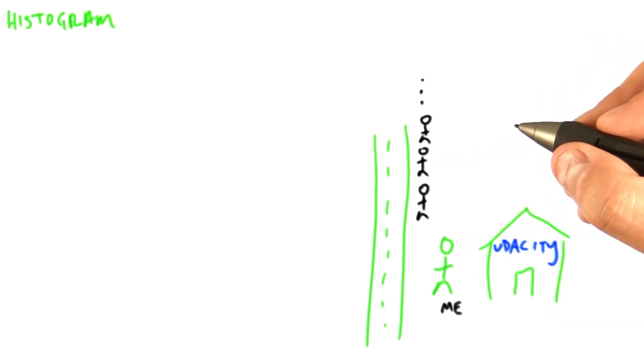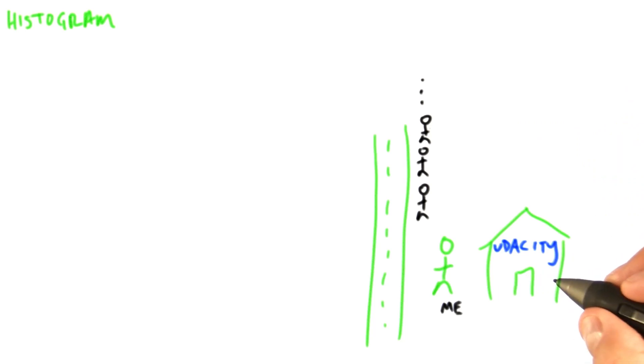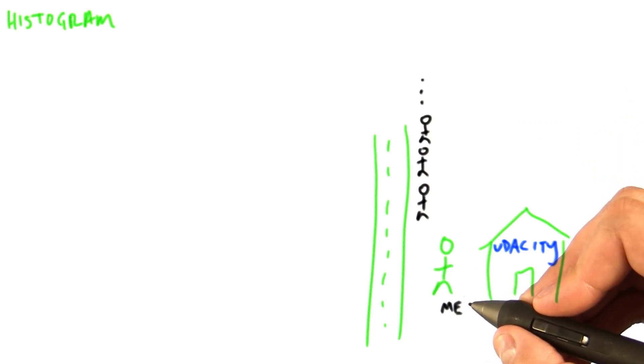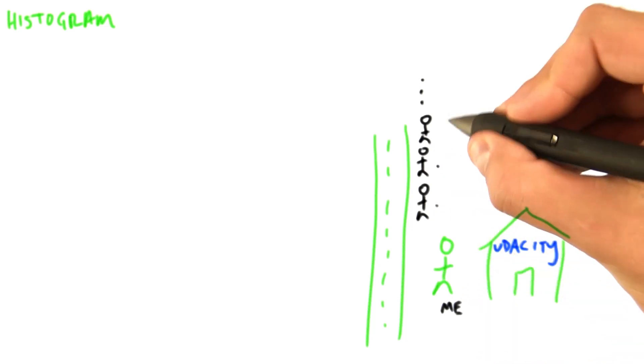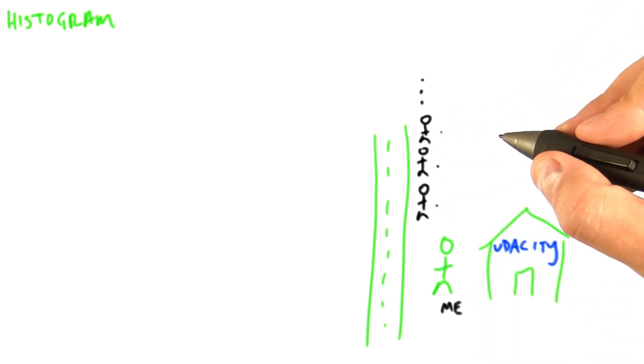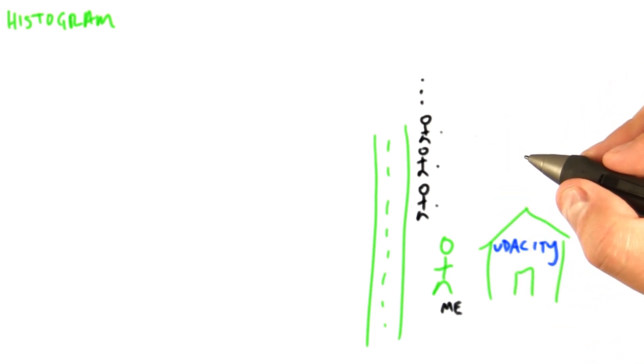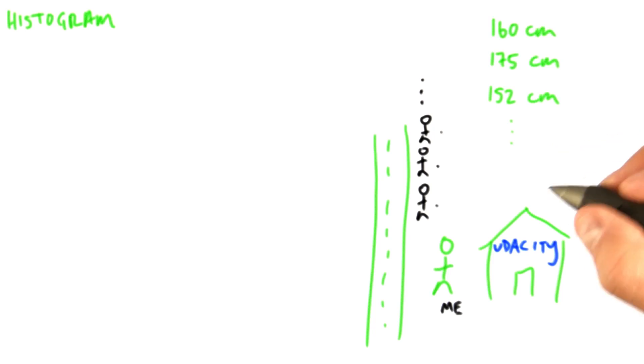This is much easier to explain with an example. I'm recording this lecture at Udacity headquarters in Palo Alto, California. So, let's say I walk out on the street in Palo Alto and record the height of each of the next 100 adults that happen to walk by. What that gets me is a list of 100 measurements. Here's what that list might look like. But it's difficult to draw conclusions from such a list.